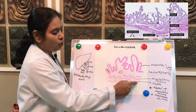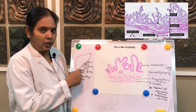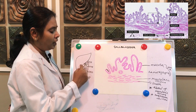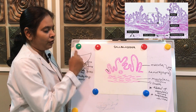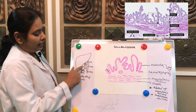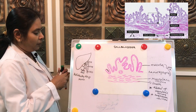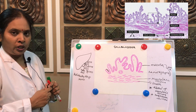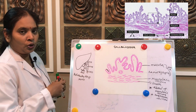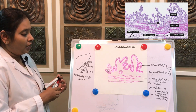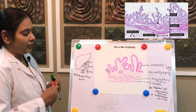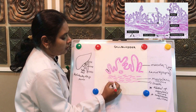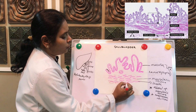The last layer is the serosa coat, lined by the peritoneum. The upper half of the gallbladder is lined by a complete peritoneum. The serosa consists of tough connective tissue and large blood vessels are also present in the serosa layer.